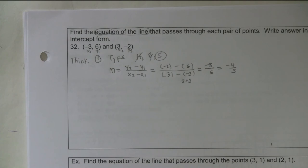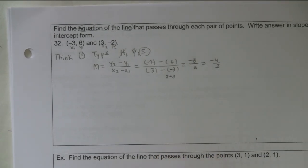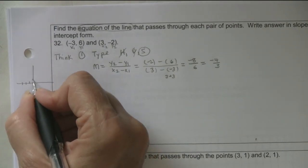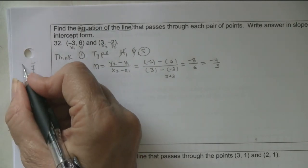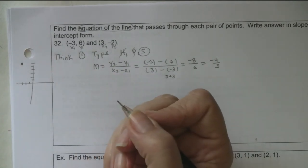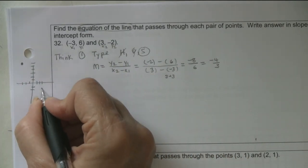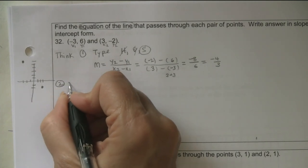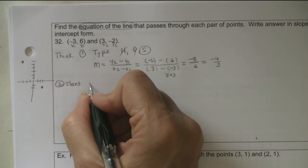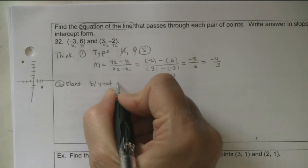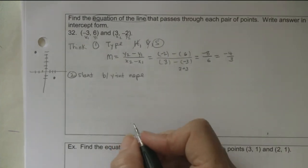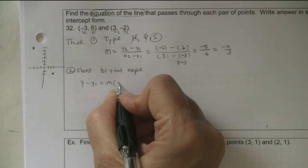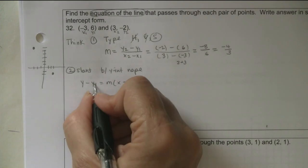Since it's slanted, I ask: do I know the y-intercept? I plot the point negative 3, 6 - it's not on the y-axis, not a special point. The other point (3, negative 2) is also not special. So I don't know the y-intercept and have to use the point-slope formula. I already have y1 equals 6 and slope equals negative 4/3, so I write: y minus 6 equals negative 4/3 times (x minus negative 3), which gives a double negative.